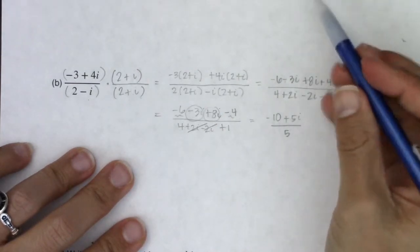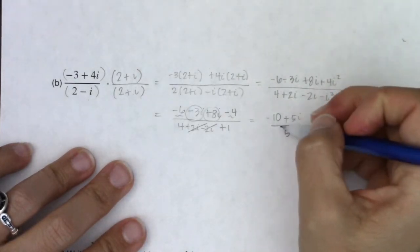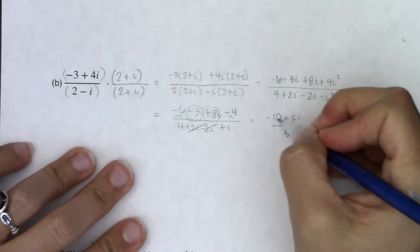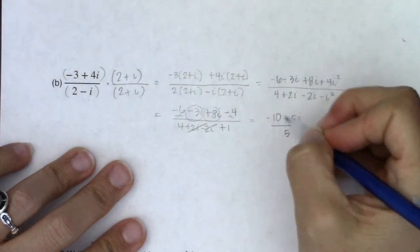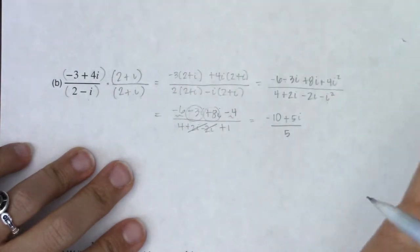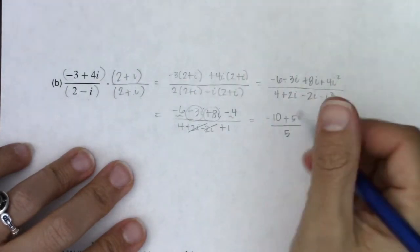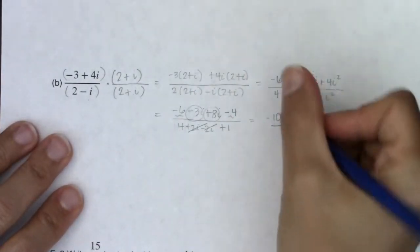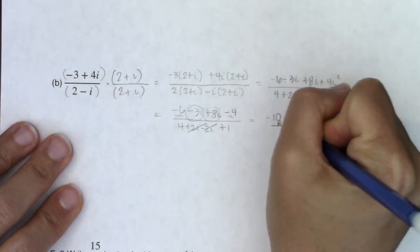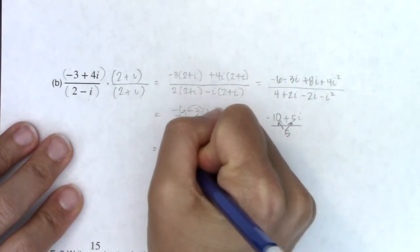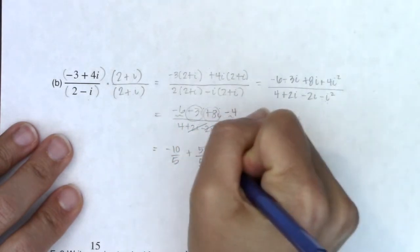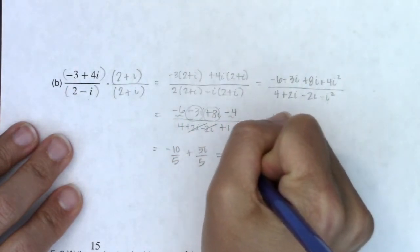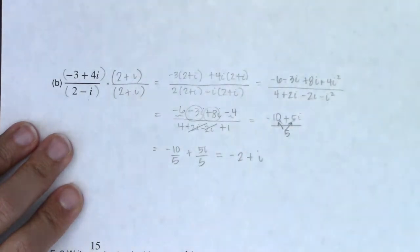And similar to example a, these numbers are dividing nicely because 10 is going to get divided by 5 nicely, and so will 5 and 5. If they didn't divide nicely, the answer would still work. It would just be a fraction. We wouldn't be able to reduce it to an integer. So let's take a look here. I've got negative 10 over 5 plus 5i over 5. So I am ultimately looking at negative 2 plus i.